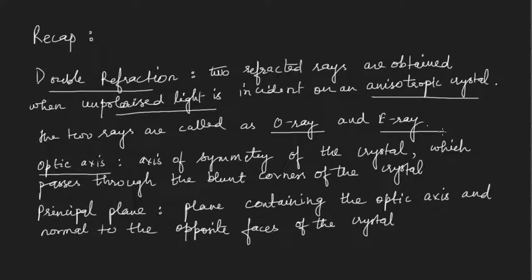The optic axis is defined as an axis of symmetry of the crystal which passes through the blunt corners — the corners where three faces meet at obtuse angles. In a calcite crystal, for example, we have two such corners. The direction passing through these two blunt corners is called the optic axis. Note it is a direction, not a physical line.